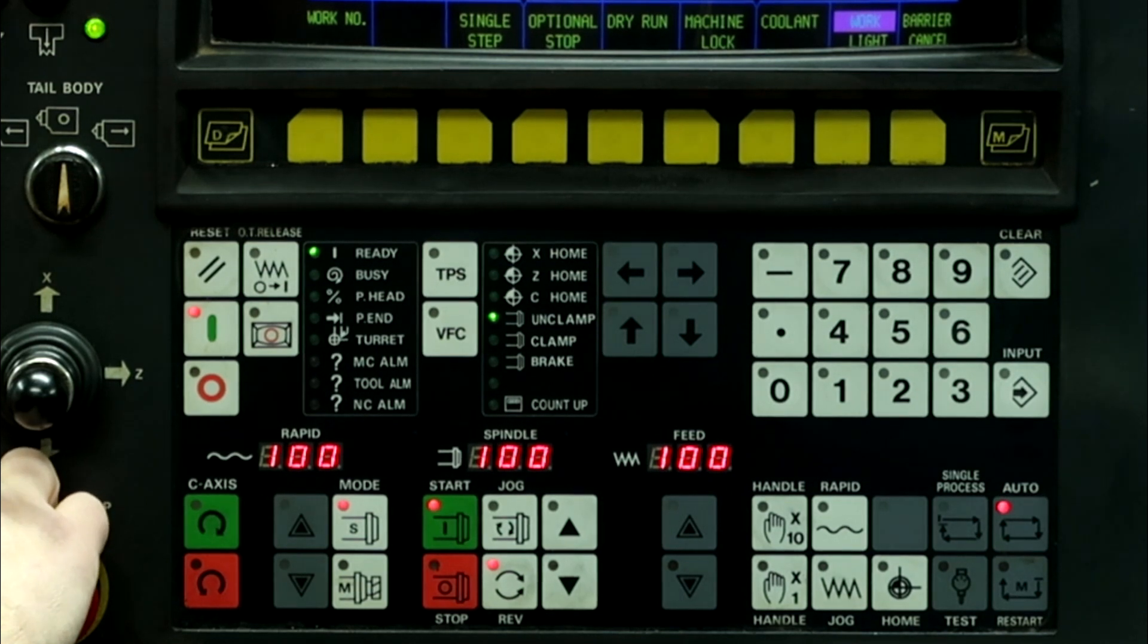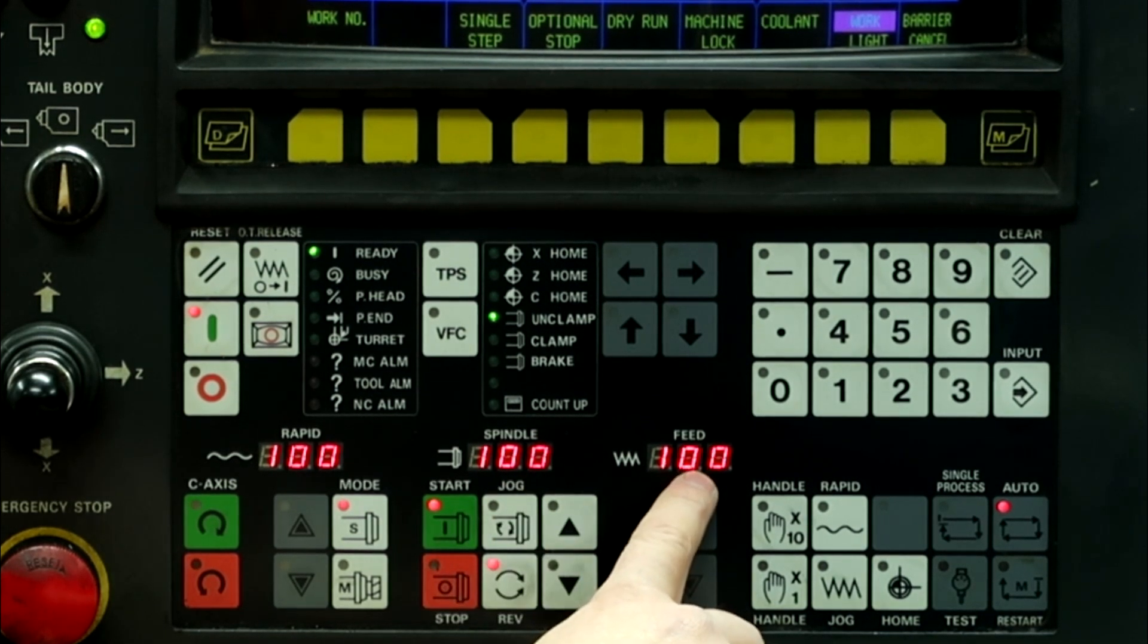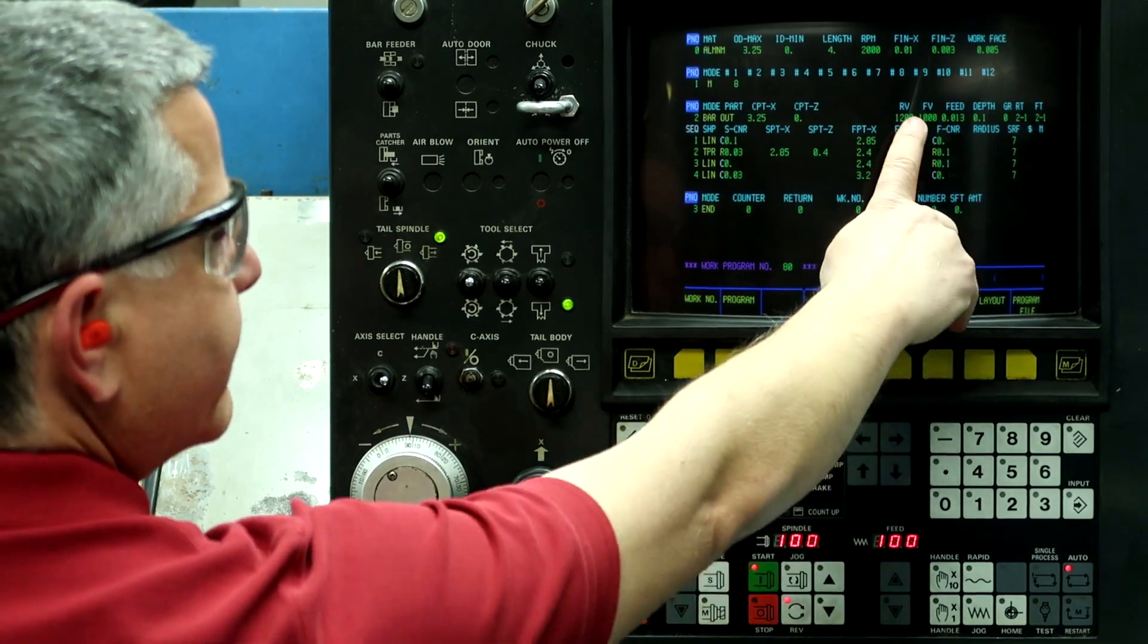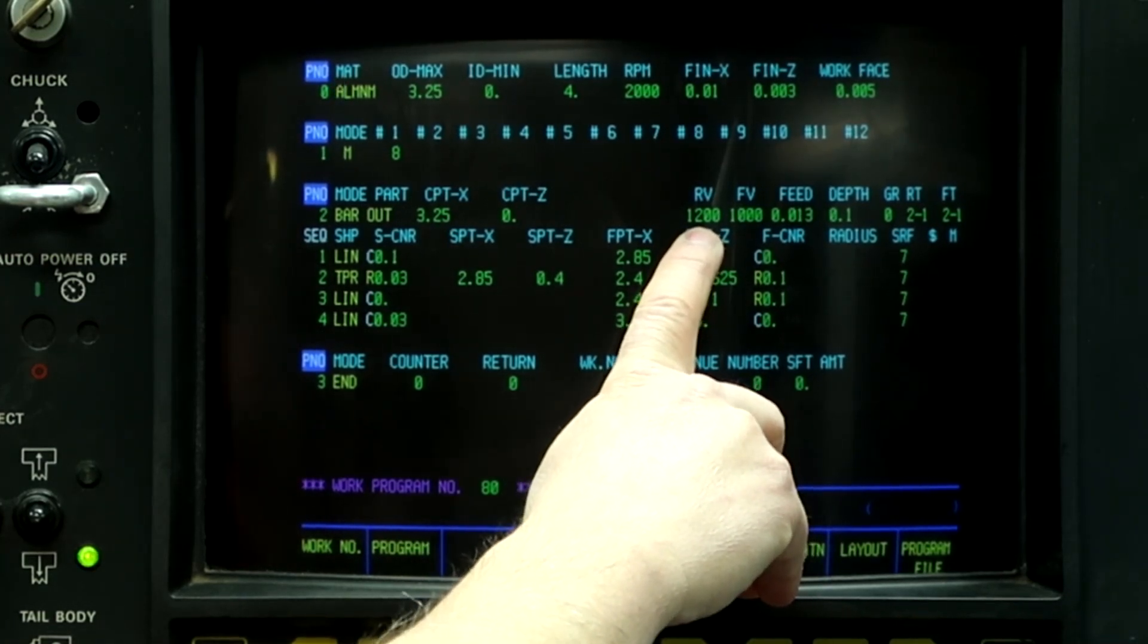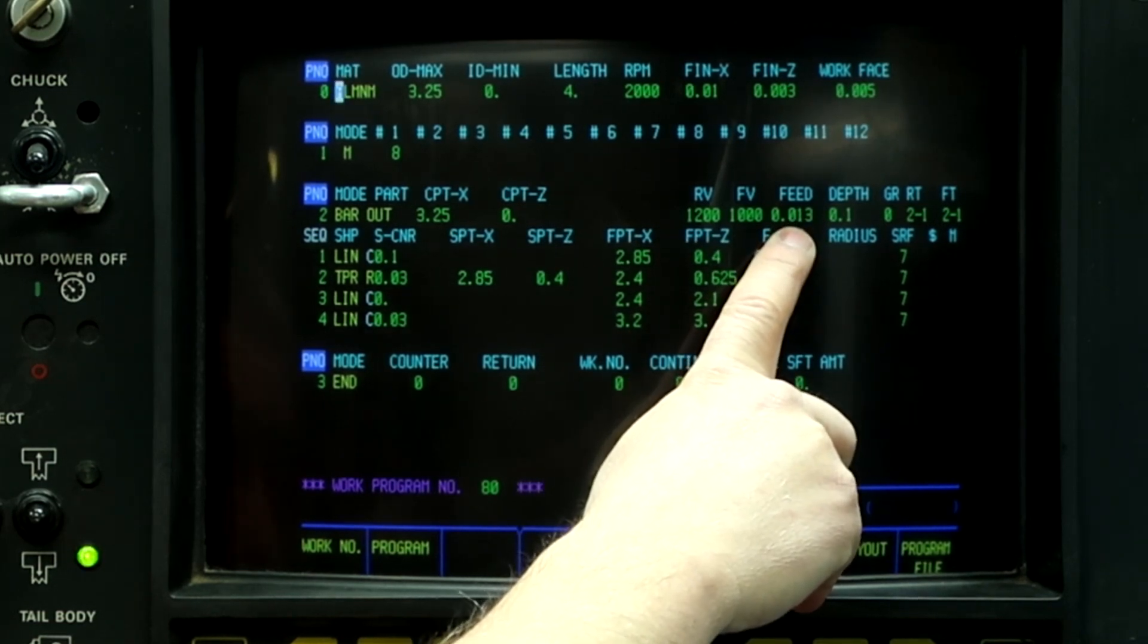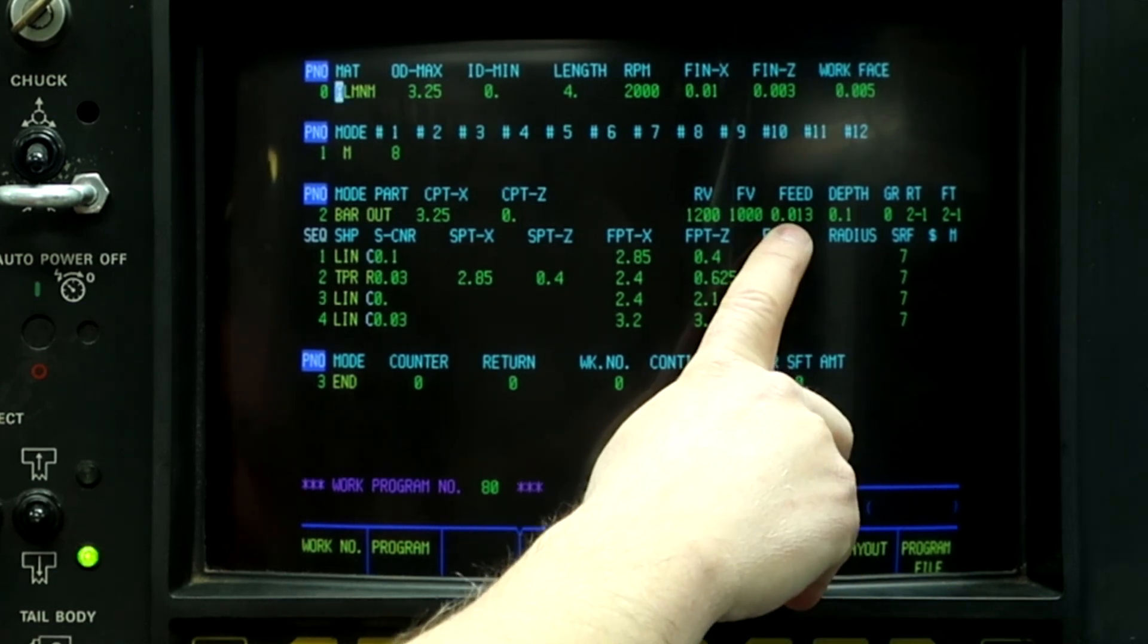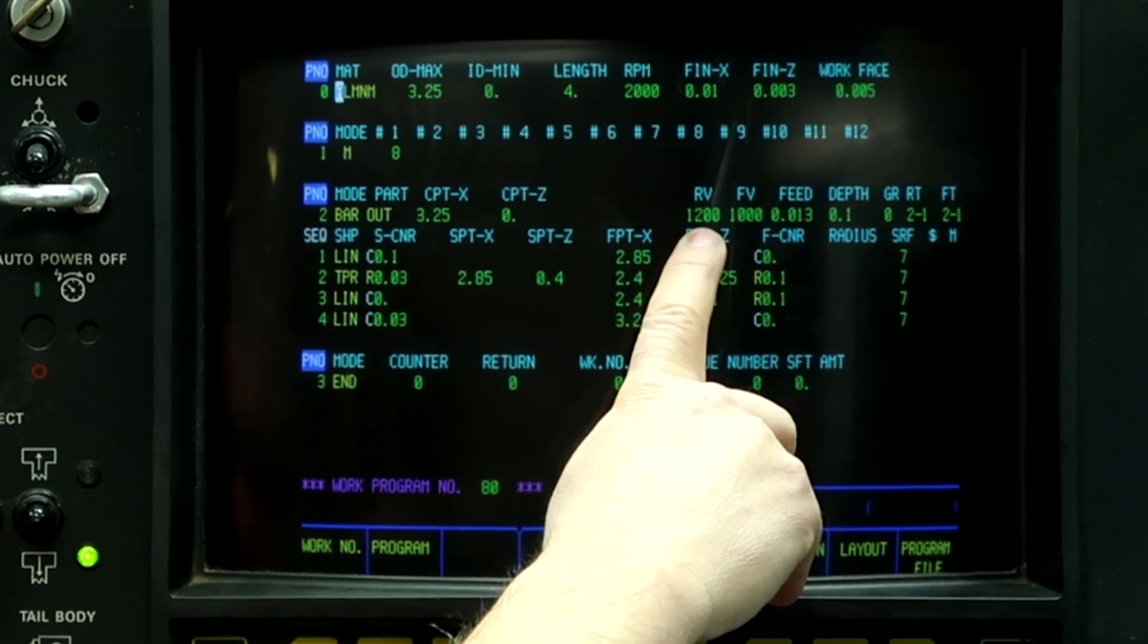So I just hit feed hold. The spindle went down to 100% on the override. The feed rate went down to 100%. And now when we go back to the program, it changed the roughing velocity to 1,200 surface feet per minute and the feed rate to 13,000th. So that was 30% higher on the feed rate and 20% higher on the spindle speed.